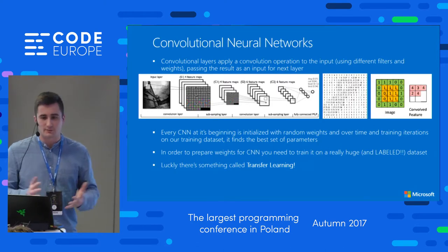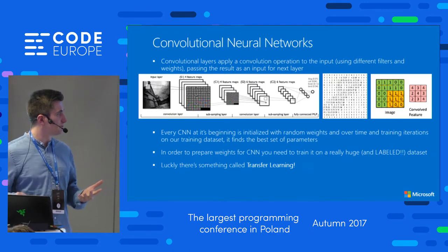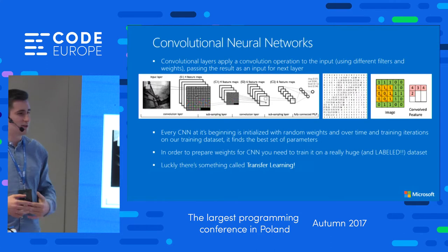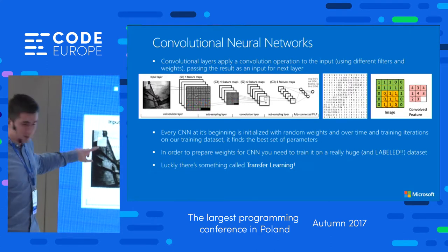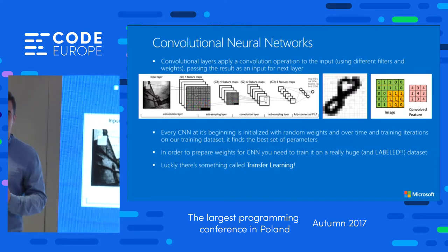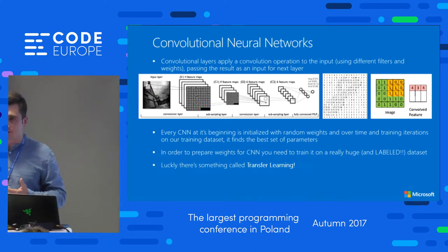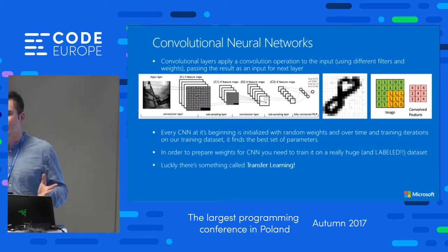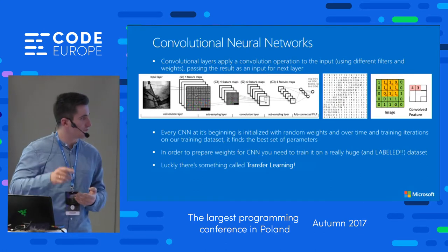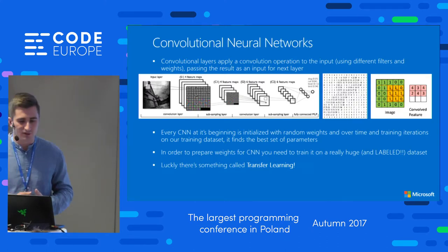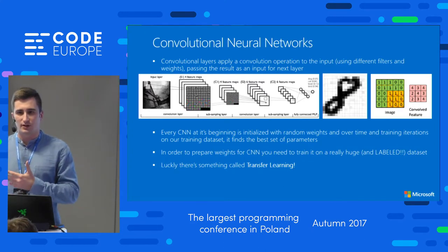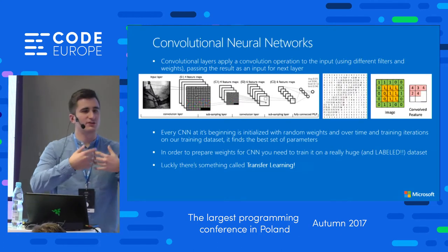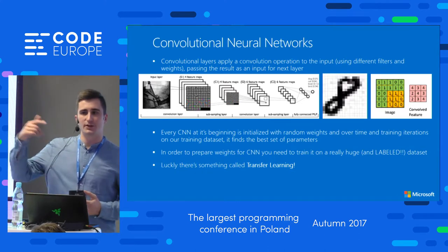So we decided to go with Faster RCNN. In short, what is CNN — Convolutional Neural Network? Simply put, it's a multi-layer neural network which on each layer transforms your image. It takes chunks of your image, transforms them using filters with specific weights, recognizes colors and borders, and extracts features. At the very beginning of training, those weights are totally random — it has to learn which filters and weights are best to extract features.